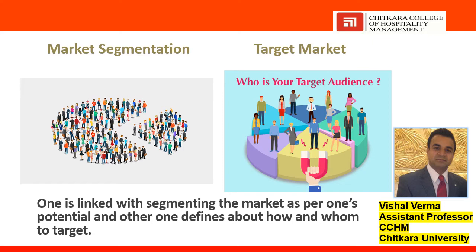Number two is target market. Target market is basically about targeting the market — it is a group of potential buyers who have the potential to pay you. So in case a sales manager is aware that a particular multinational company has the potential to pay, they'll be sending the sales team to that company to bring more and more people to the hotel. So it is basically about targeting those people in order to secure the business.